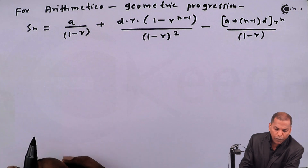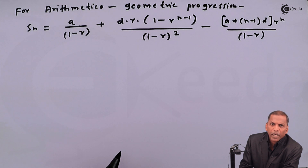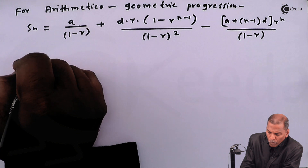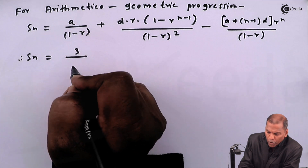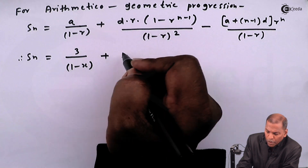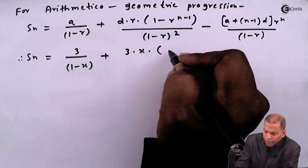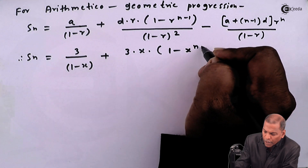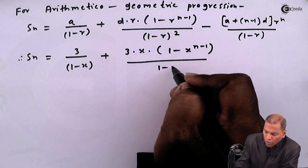In this formula we substitute a equal to 3, d equal to 3, and r equal to x to get: S_n equal to 3 upon (1 minus x), plus 3x·(1 minus x^(n-1)) upon (1 minus x)^(n-1).